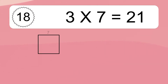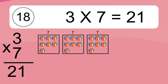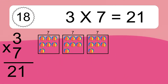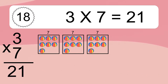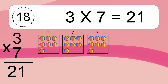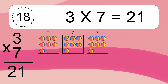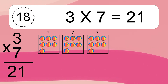Three times seven equals what? Three times seven equals 21. We have three boxes, and each box has seven colorful balls inside. If you count all the balls in all the boxes together, you will have three times seven balls. This equals 21 balls.